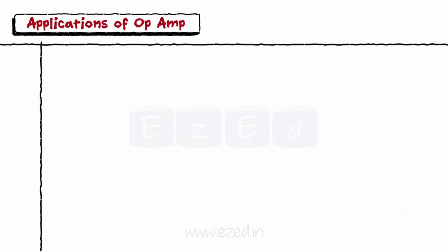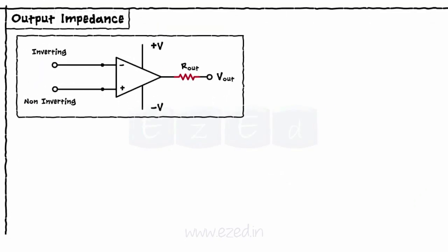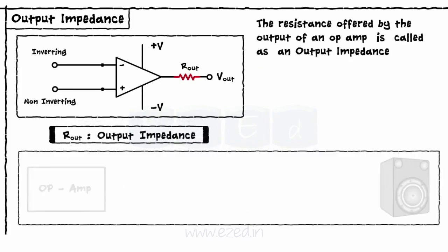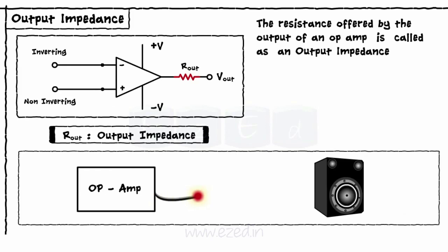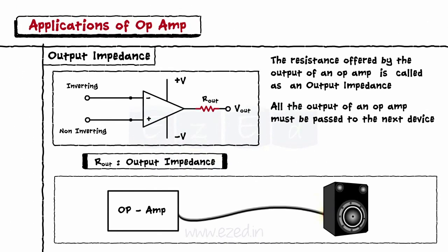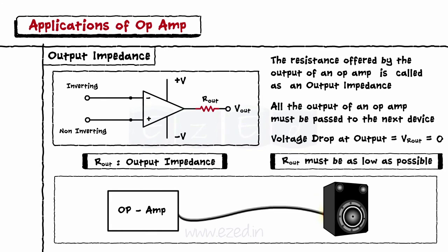The third term is output impedance — the resistance offered by the output of an op-amp. Generally, an output device like a speaker is connected next to an op-amp. Hence, it is necessary that all the output of an op-amp must be passed to the next device. In other words, the voltage drop at output must be zero. Hence, output impedance must be as low as possible.